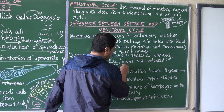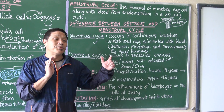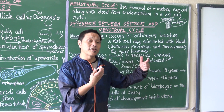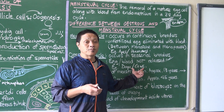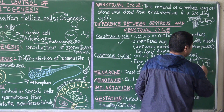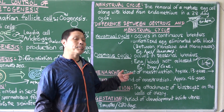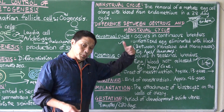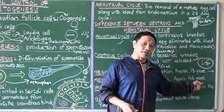Seasonal breeders have a certain breeding period where the female is receptive, and it does not happen throughout the year — there is a season for it. However, seasonal breeders can breed throughout their lifetime. Menarche is the onset or beginning of menstruation, approximately at 13 years old. Menopause is the end of menstruation, around 45 to 50 years of age.